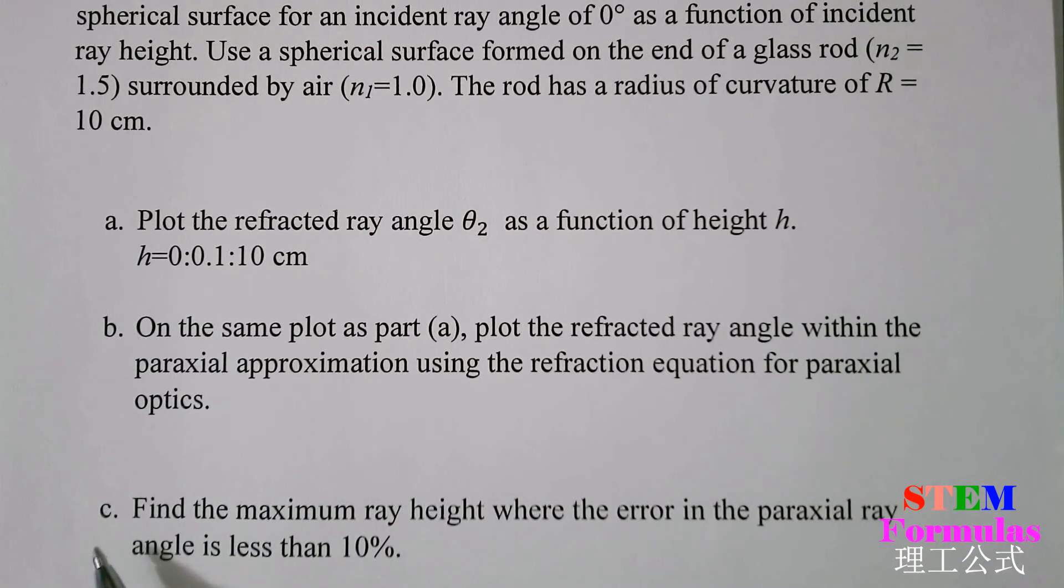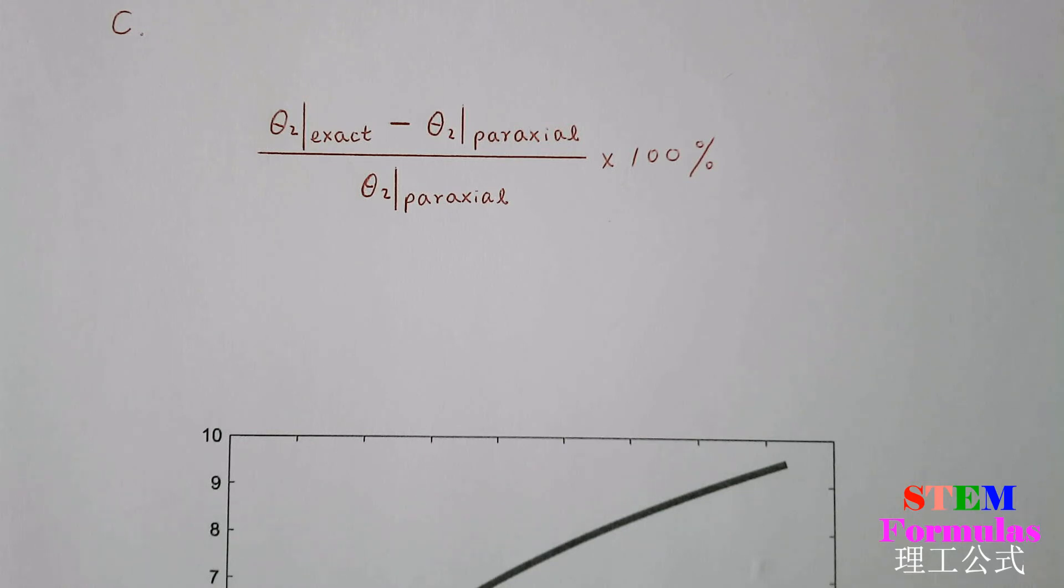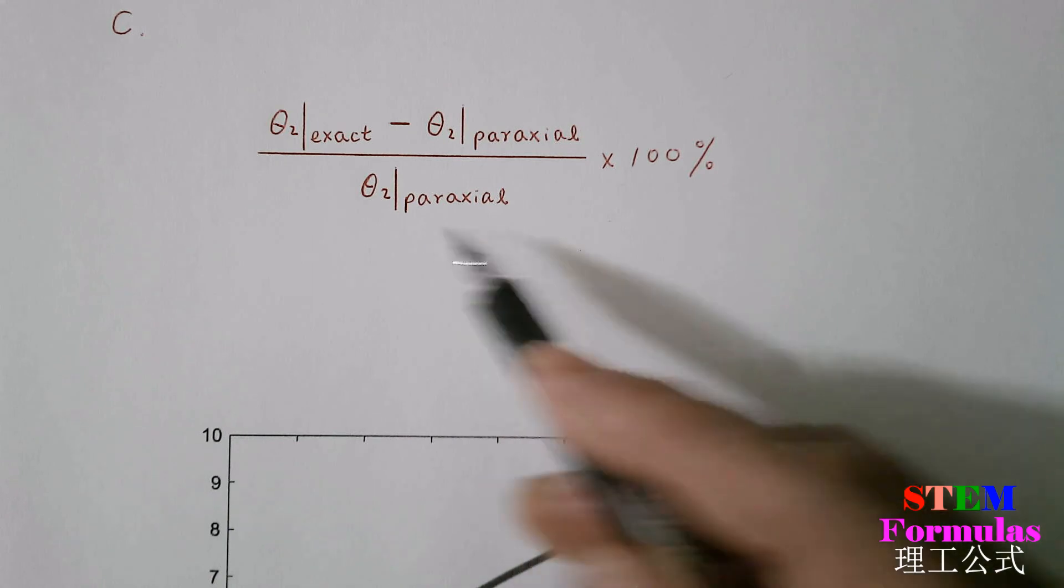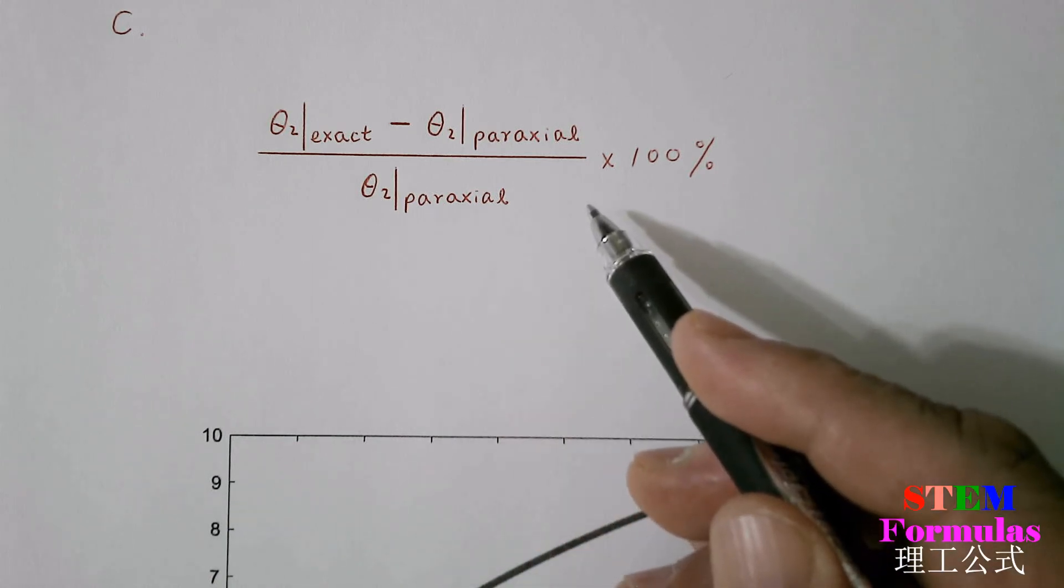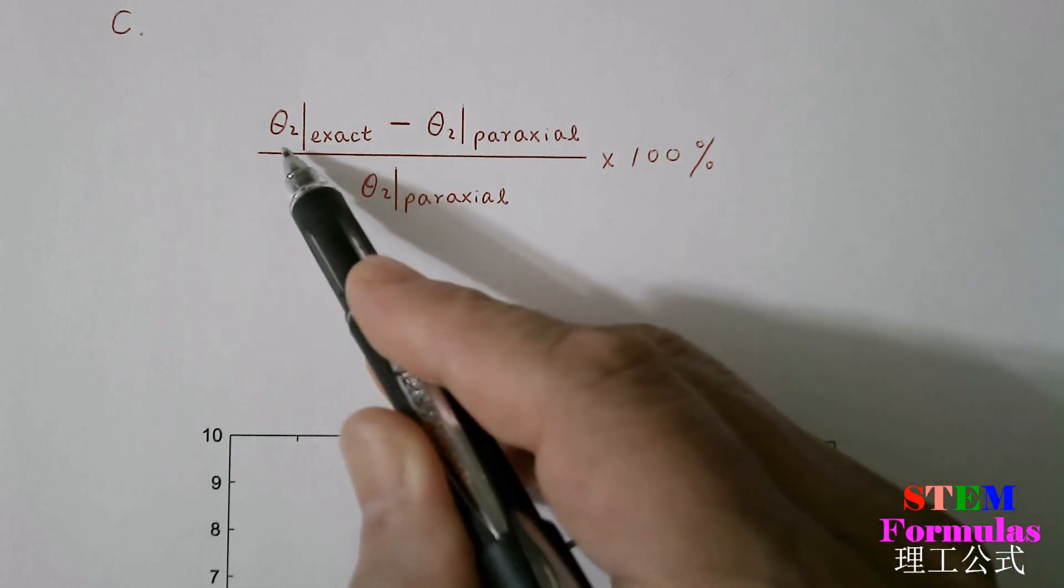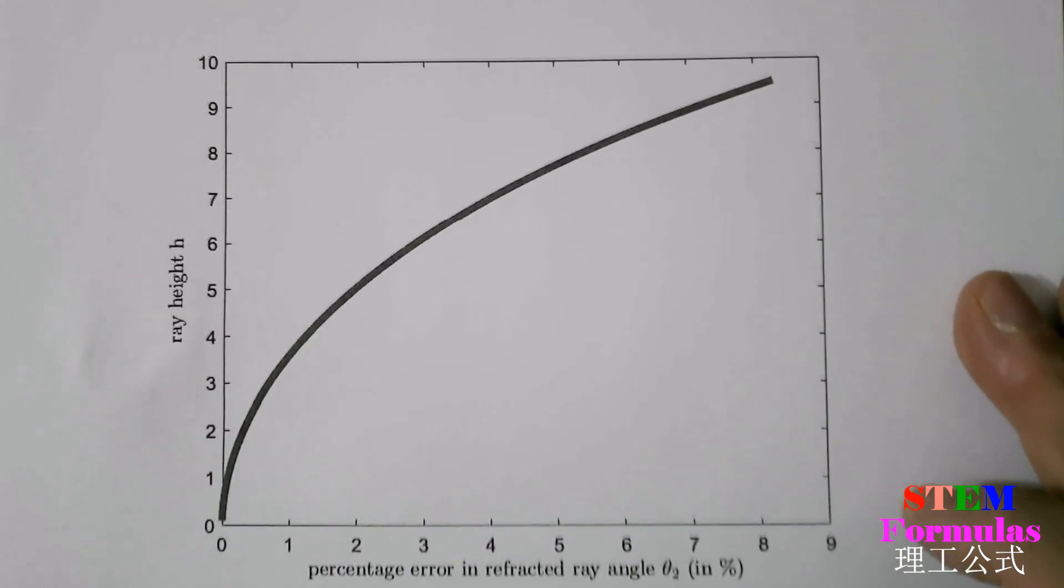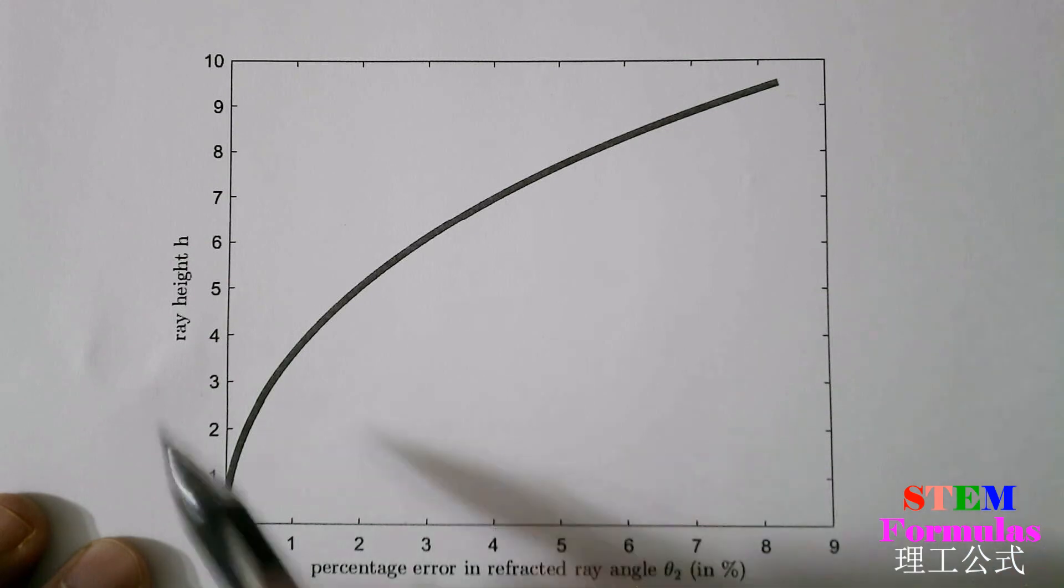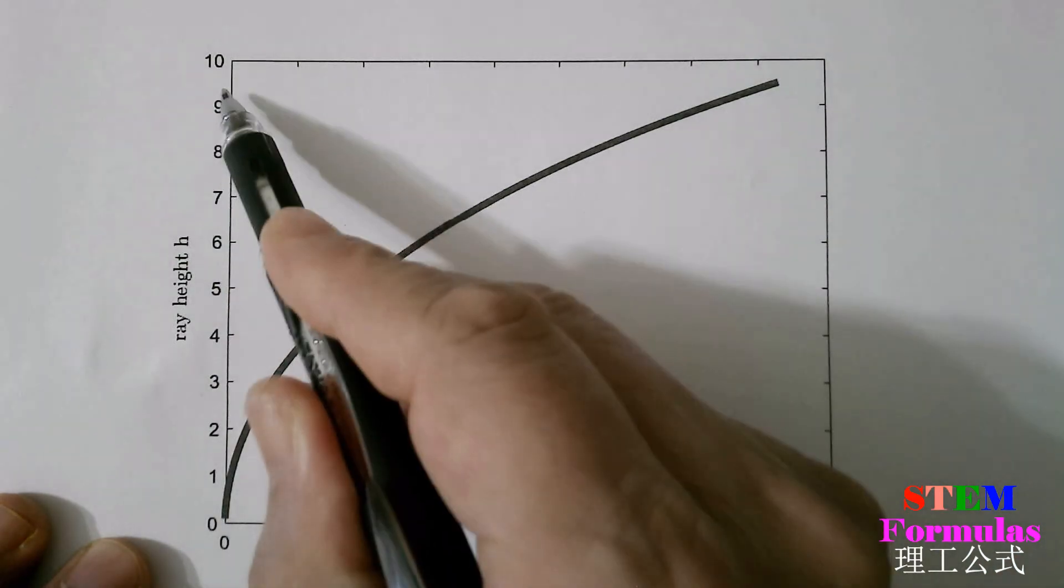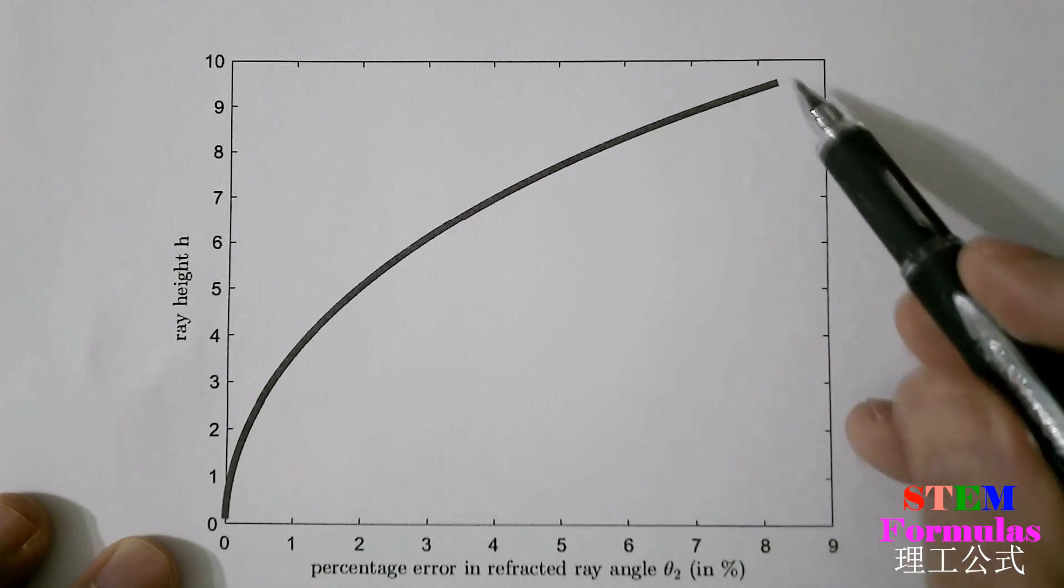For question C, we define percentage error by this formula. In this formula, we treat θ₂ from paraxial approximation as ideal θ₂, and θ₂-exact is the θ₂ from exact ray tracing. We plot the results as following. For all ray heights from 0 to almost 10 cm, the percentage errors are all within 10%. Here's a maximum of 9%, but we have percentage error smaller than 9%.